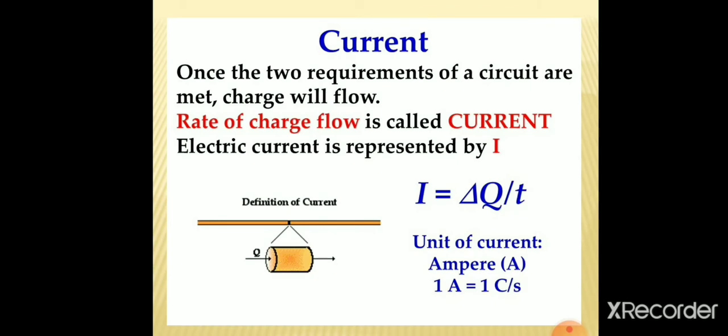We usually say rate of charge flow is called current, represented by capital I. Capital I is equivalent to delta Q by t, where delta Q is the amount of charge flowing in an interval of t seconds. 1 ampere is equivalent to 1 coulomb per second, where coulomb is the unit of charge and second is the unit of time. Ampere is represented by capital A.